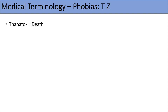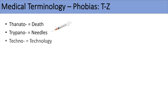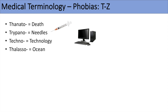The next list of phobias starts with T to Z. Thanato means death, so thanatophobia is a fear of death. Trypano relates to needles, so trypanophobia is a fear of needles. Techno relates to technology, so technophobia is a fear of or aversion to technology. Thalasso refers to the ocean, so thalasophobia is a fear of the ocean. Tapho or tafo refers to being buried alive, so taphophobia or tafophobia is a fear of being buried alive.